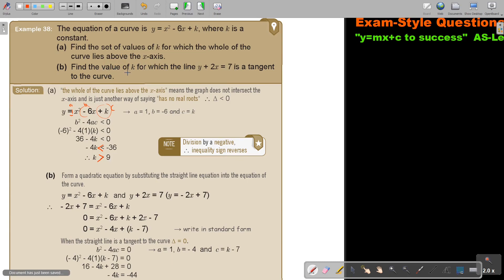Now, find the value of K for which the line y = 2x + 7 is a tangent to the curve. Now, when it's a tangent to the curve, when the line, you see, there's the extra line now coming in. So first I have to make it one. So form a quadratic equation by substituting the straight line equation into the equation of the curve.